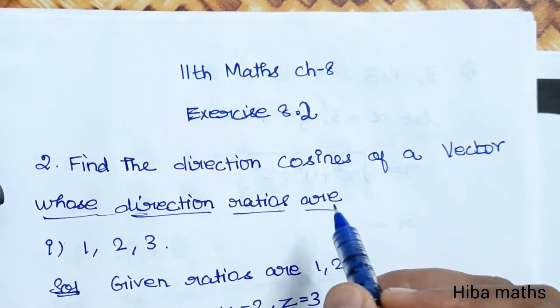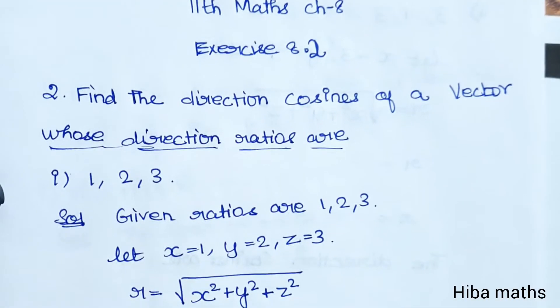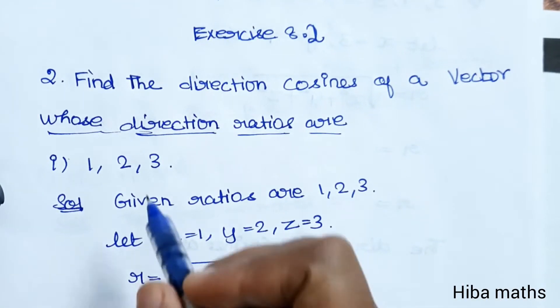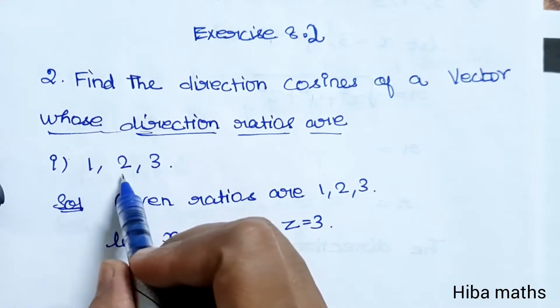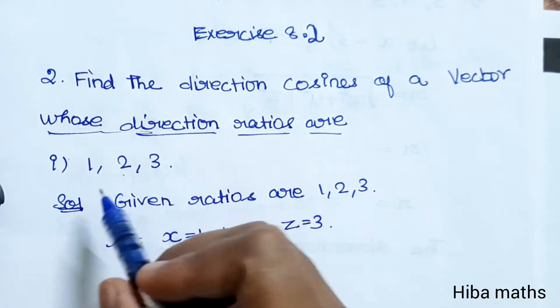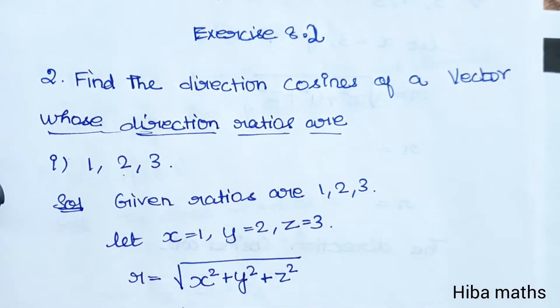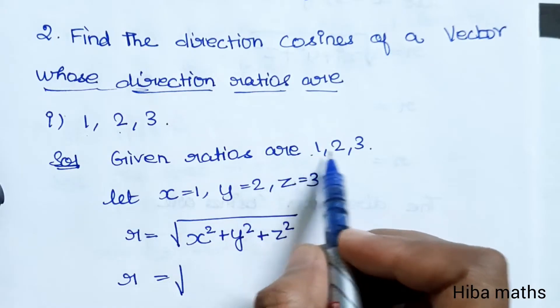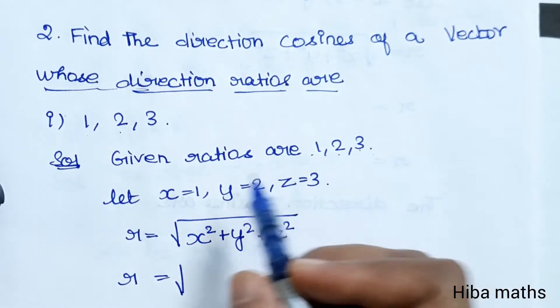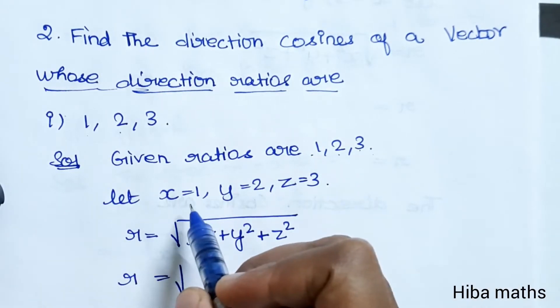We need to find the direction cosines. To find direction cosines from direction ratios, we first need to find R. For the 1st question, the given ratios are 1, 2, 3.